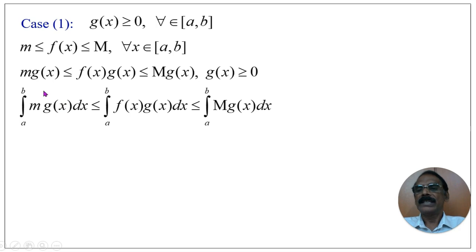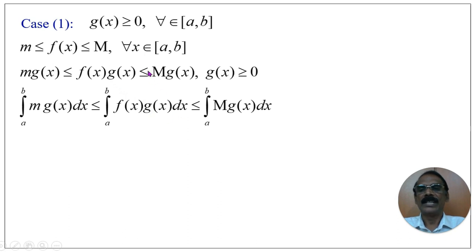Now taking the integral across the inequality, we get the integral from a to b of m·g(x) dx ≤ the integral from a to b of f(x)g(x) dx ≤ the integral from a to b of M·g(x) dx.